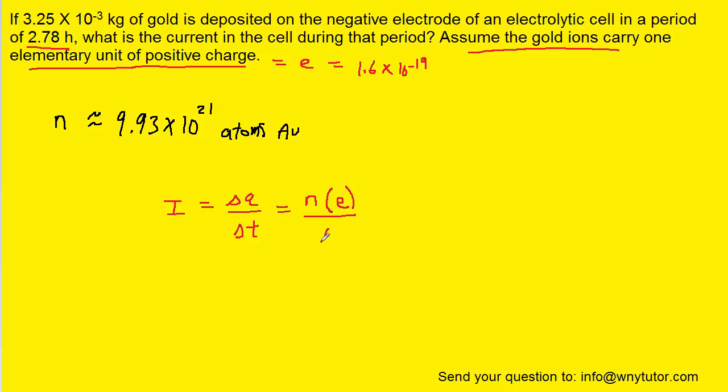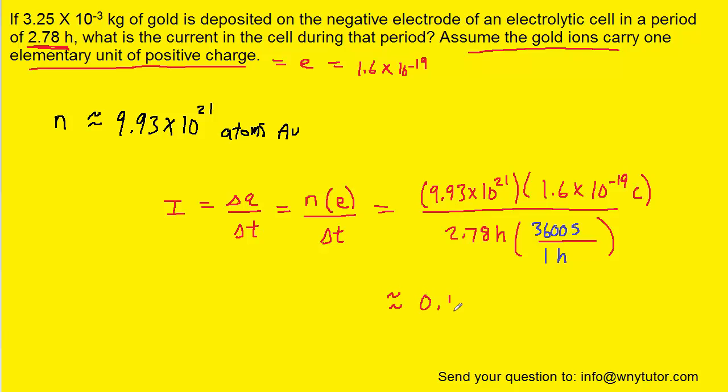And then we're going to divide this by the time. We'll go ahead and plug in the value of n that we found, the value of e, as well as the time. The only thing about the time is that we're going to have to convert it into seconds. Notice the conversion, that one hour is 3600 seconds. And when we pick up our calculators and compute this, we get a value of approximately 0.159 amps.